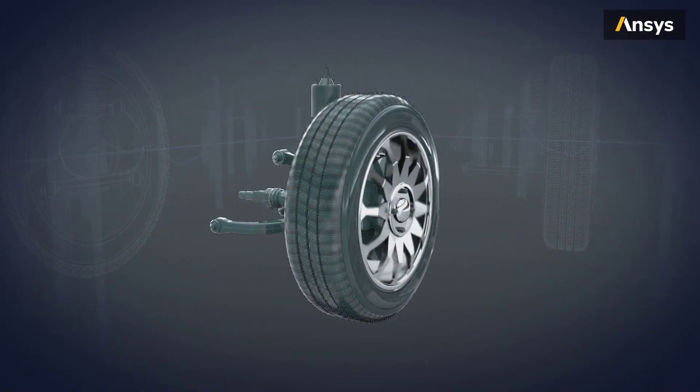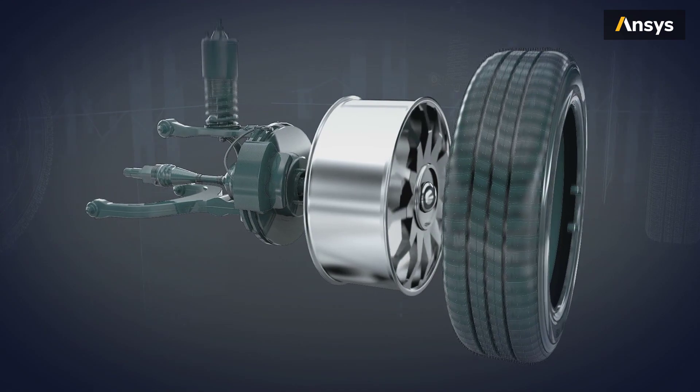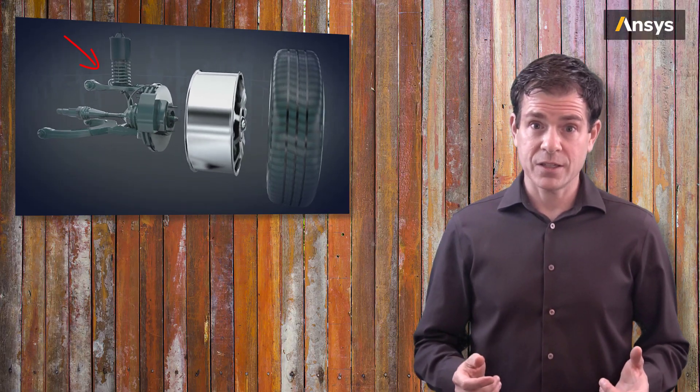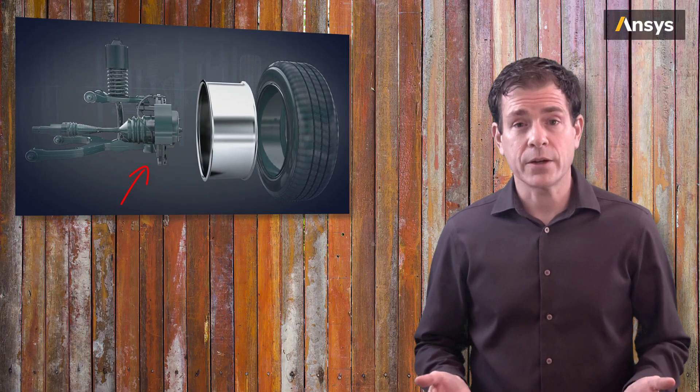For instance, in automobile suspension, there are several mechanisms that can dissipate energy, from the suspension, to the brakes, to the tires.